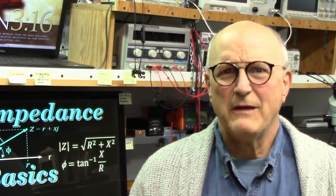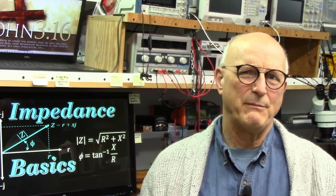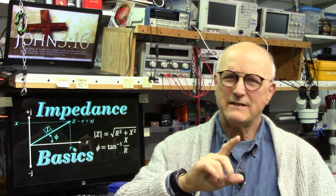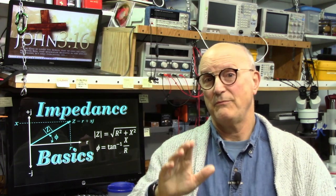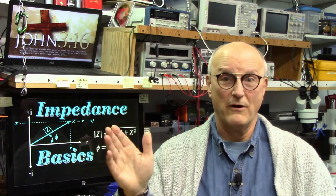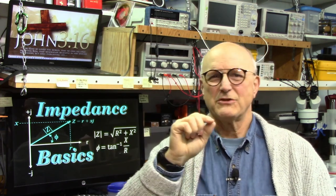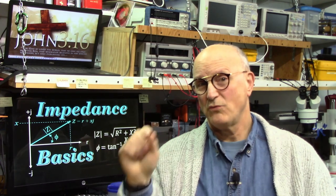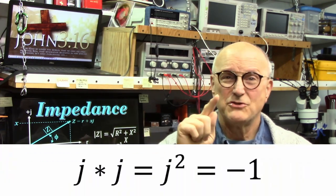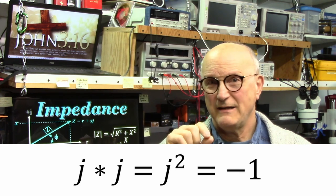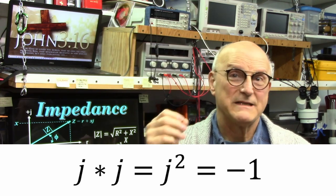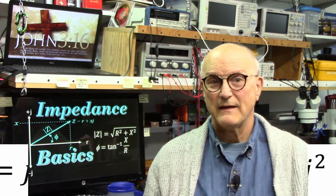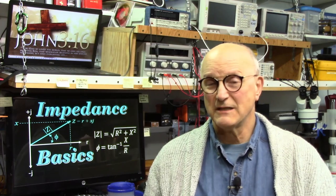There is one very important property of this impossible, inescapable number that I must mention before I continue. If 2 is the square root of 4, then 2 squared — or 2 multiplied by itself — is 4. And if j is equal to the square root of minus 1, then j squared is equal to j times j, j multiplied by itself, and that must equal minus 1. You'll see why this is important in just a little while.